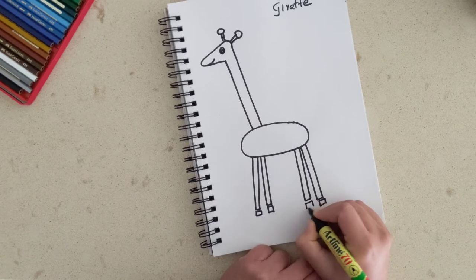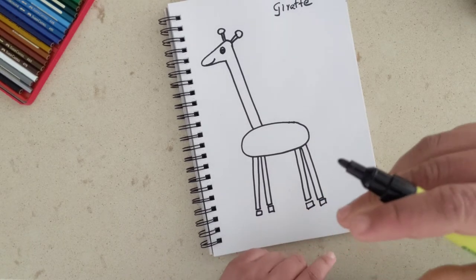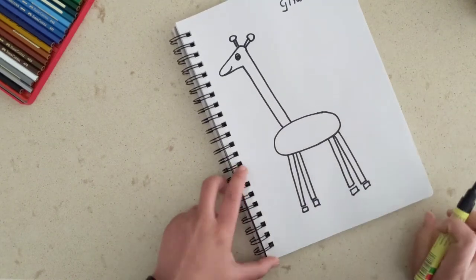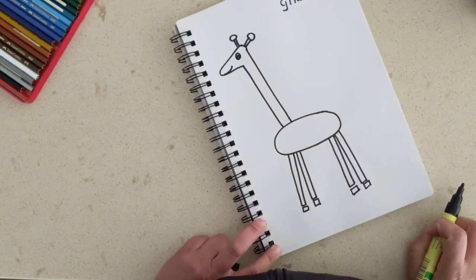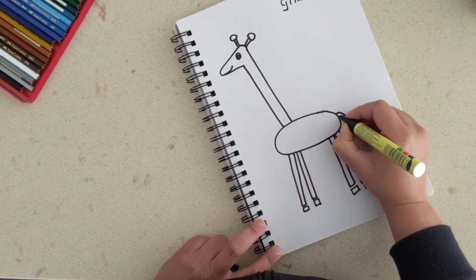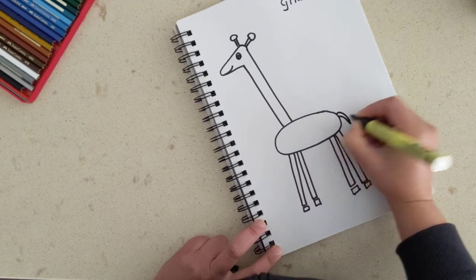Giraffes love to eat leaves. They eat the leaves of the trees, and since they are so tall, they eat the leaves of the trees from the top. Our giraffe is ready, all he needs is a little tail. One small tail like that, perfect.